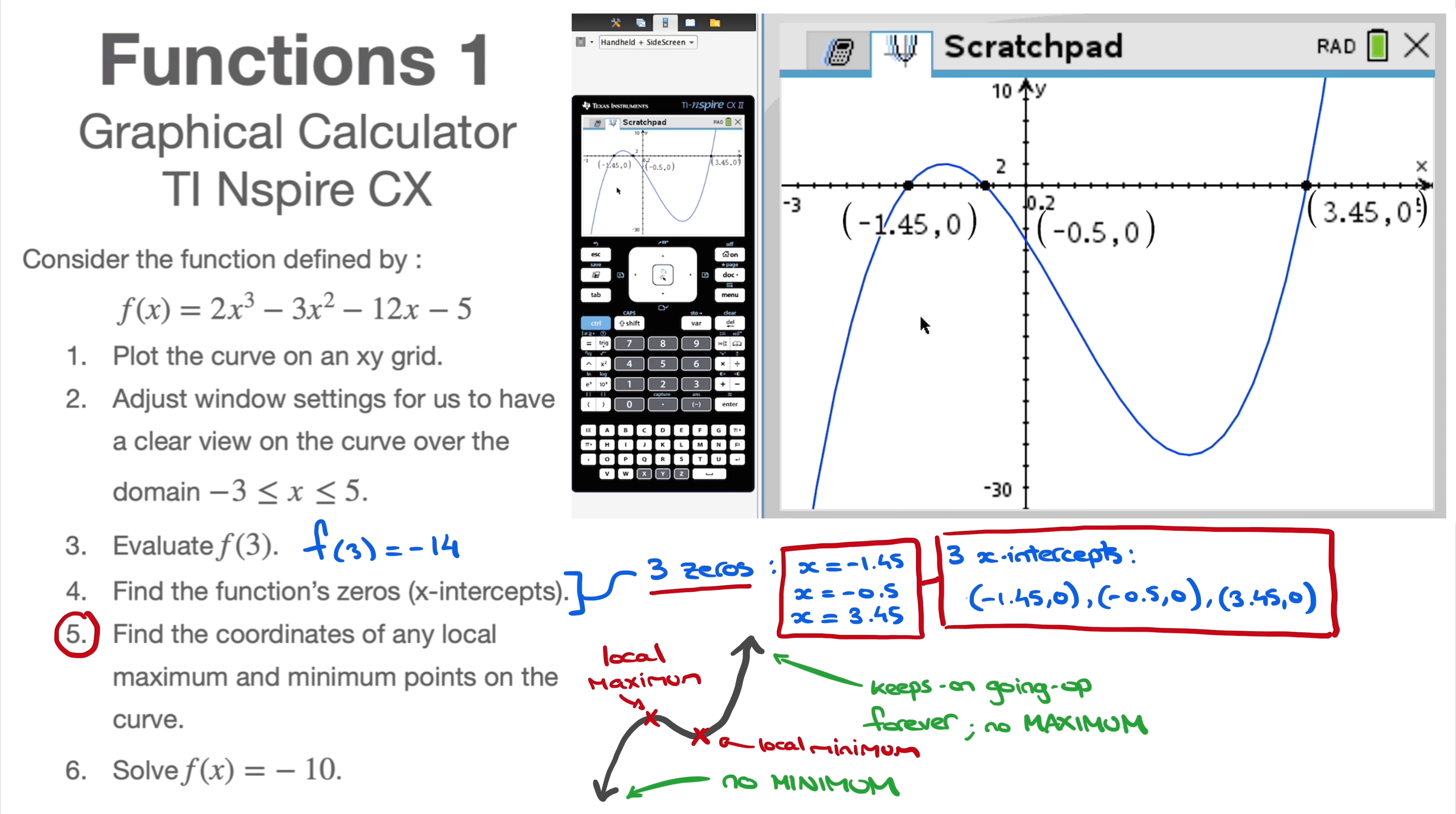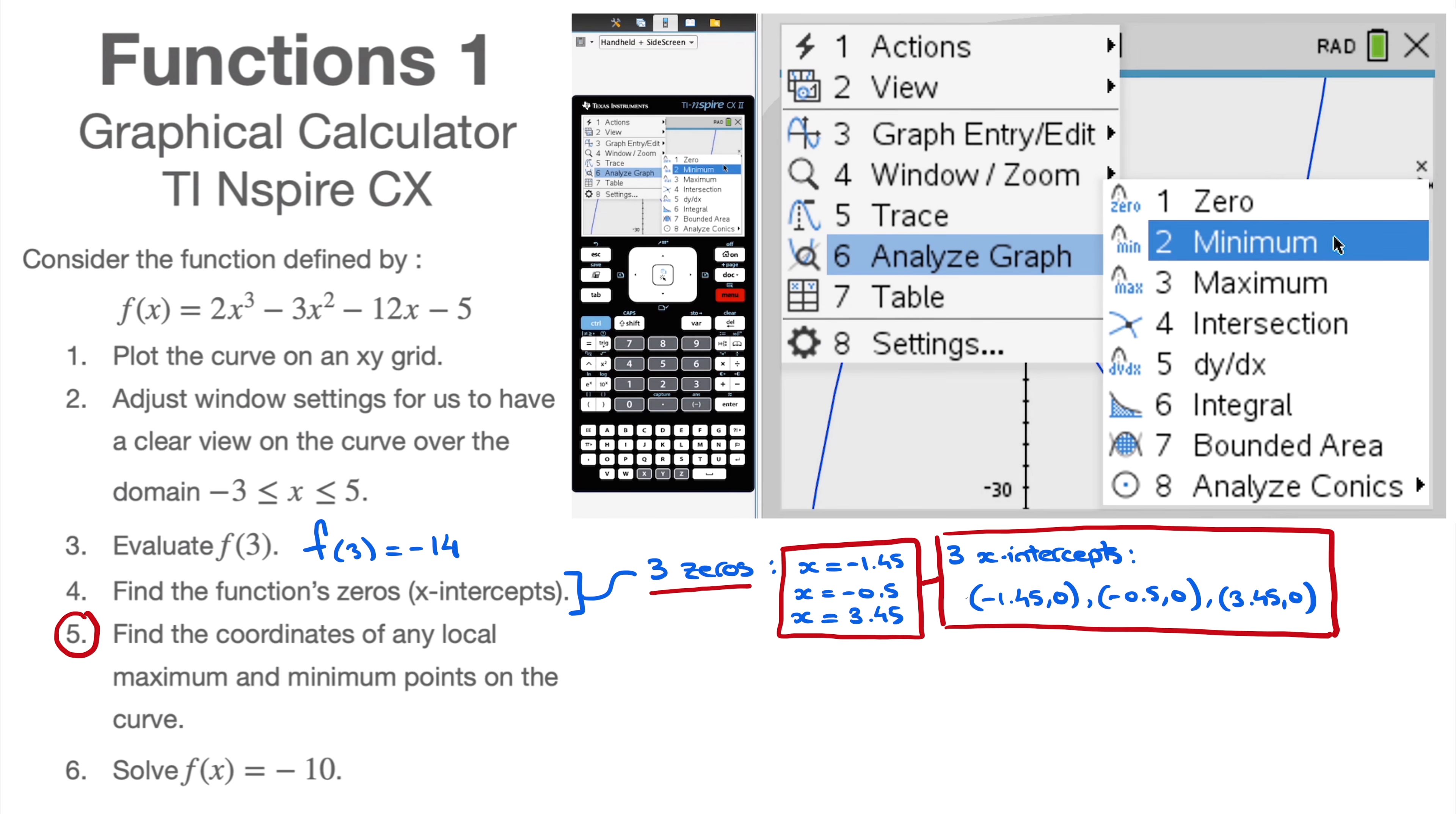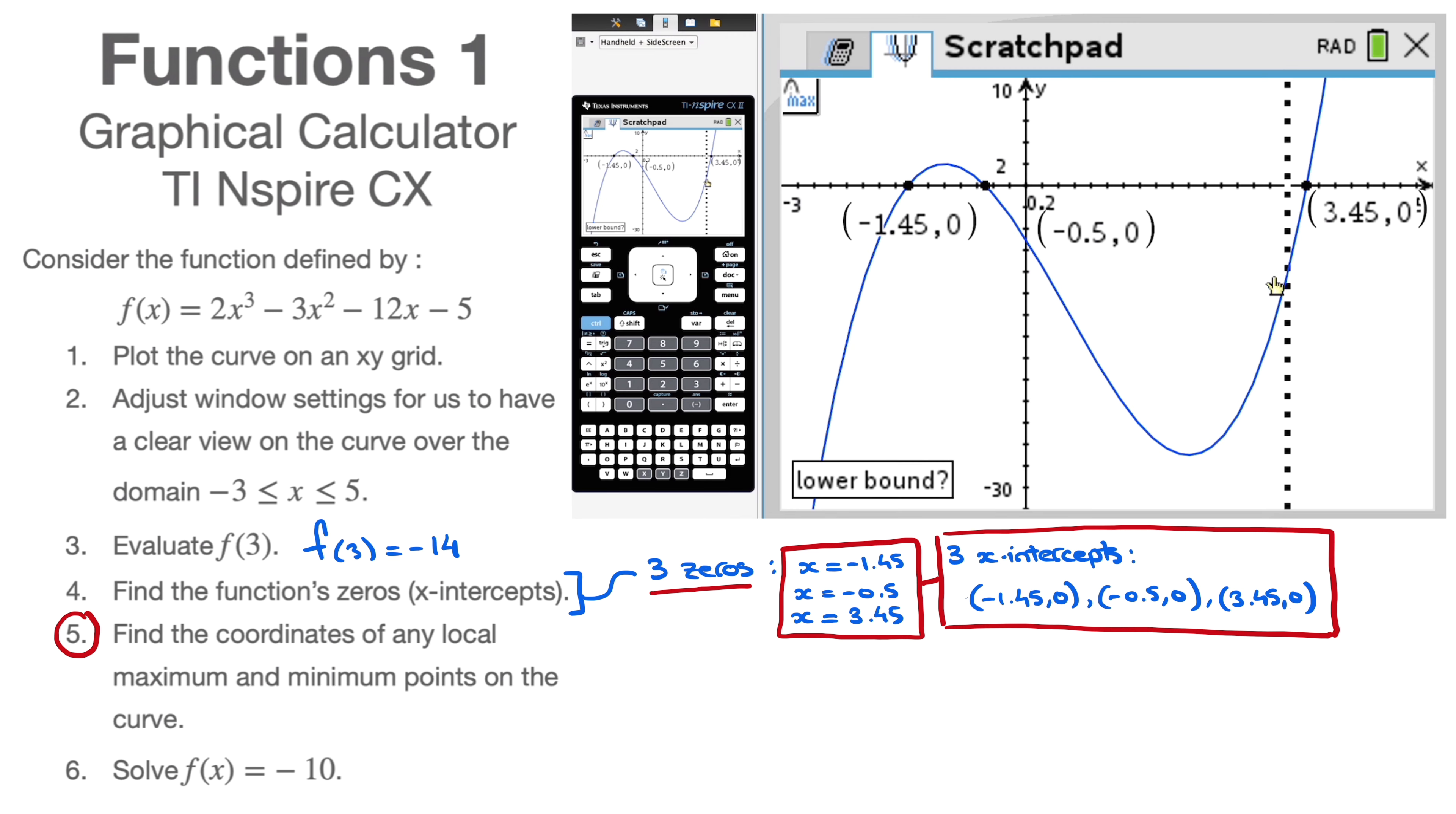To find them, luckily for us, this calculator has that function built in as well. All I have to do is click on Menu, Analyze Graph again. I'll start with the maximum, and I click on Maximum. Maximum point is roughly here, yeah? It's asking me for a lower bound again, so I go anywhere to the left of that. I click. It's now asking me for an upper bound, so I go anywhere to the right of that, and I click. And I have the maximum point right here. Right? So the maximum point, and I can now write it. The maximum has coordinates -1, 2.